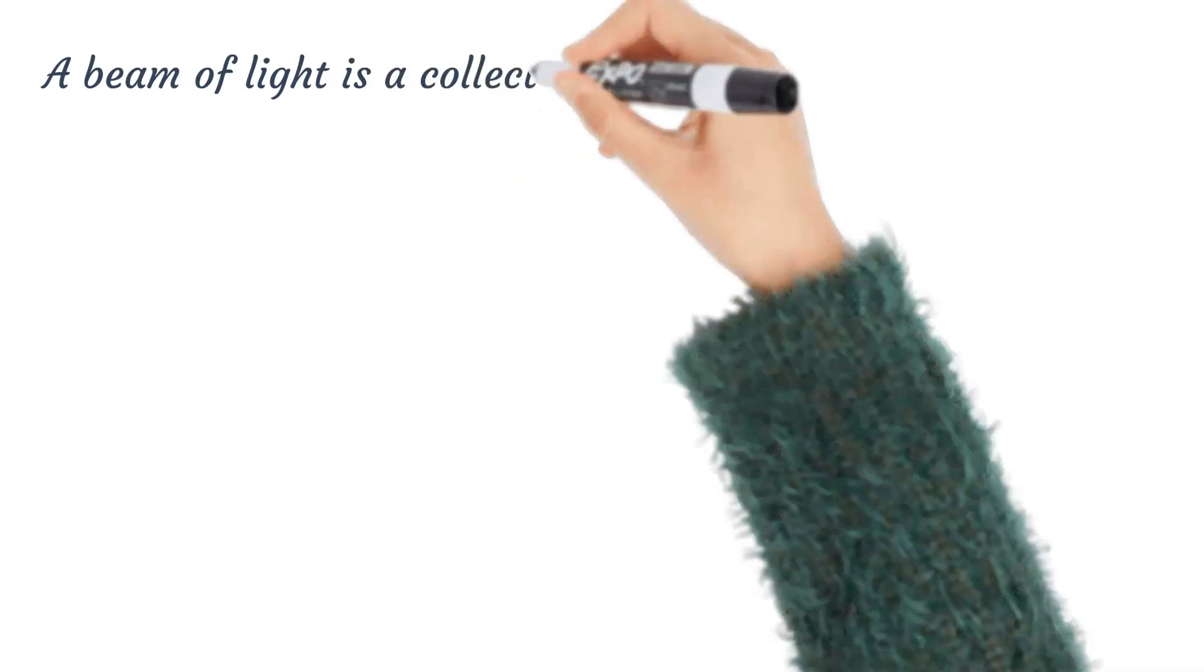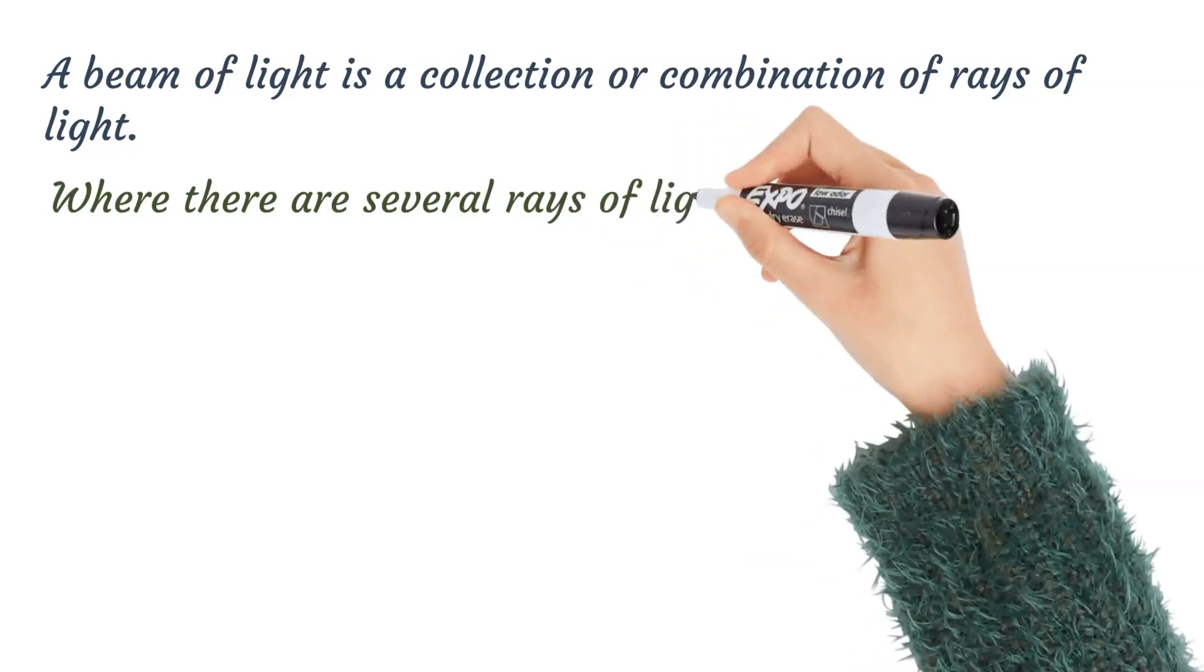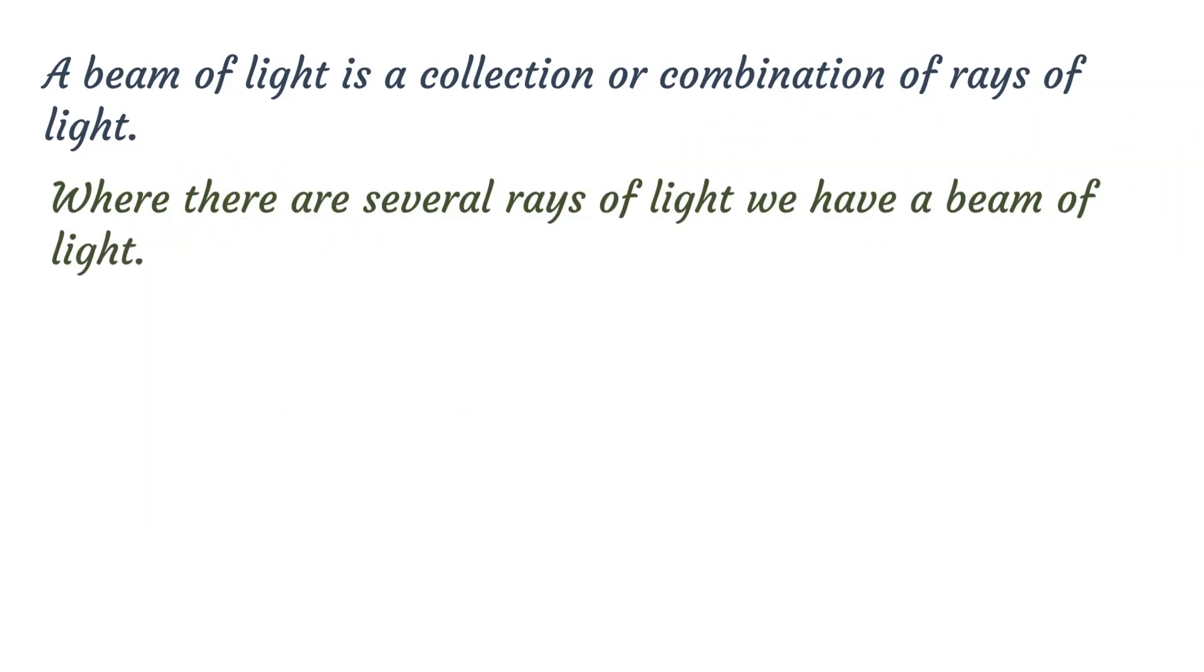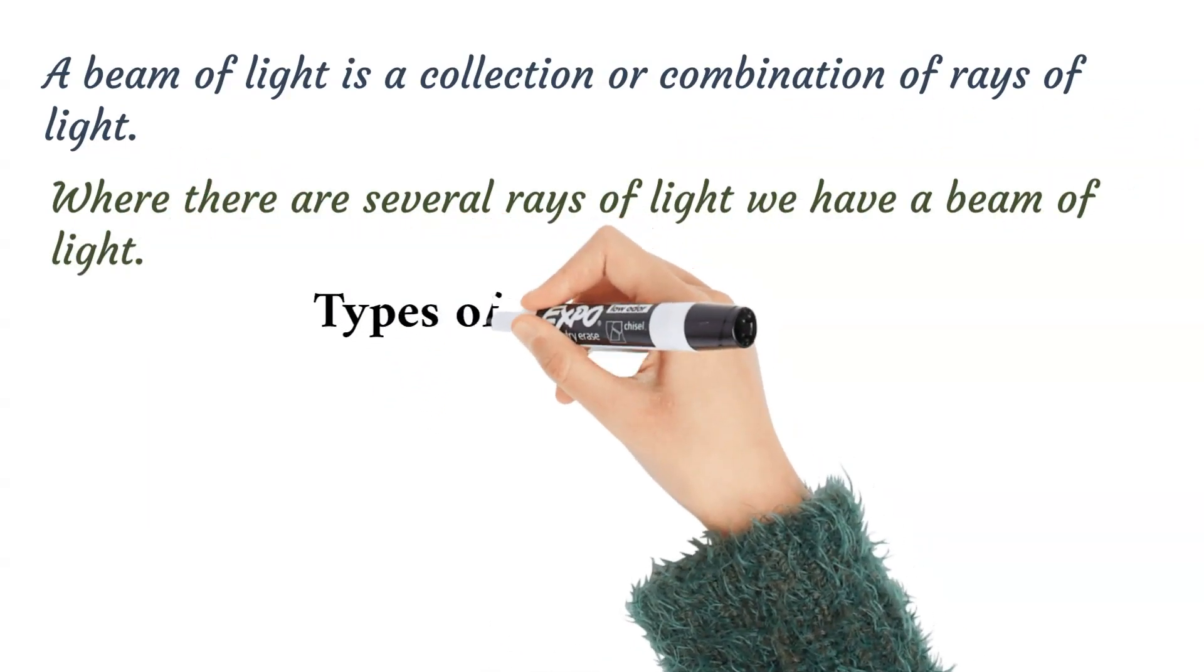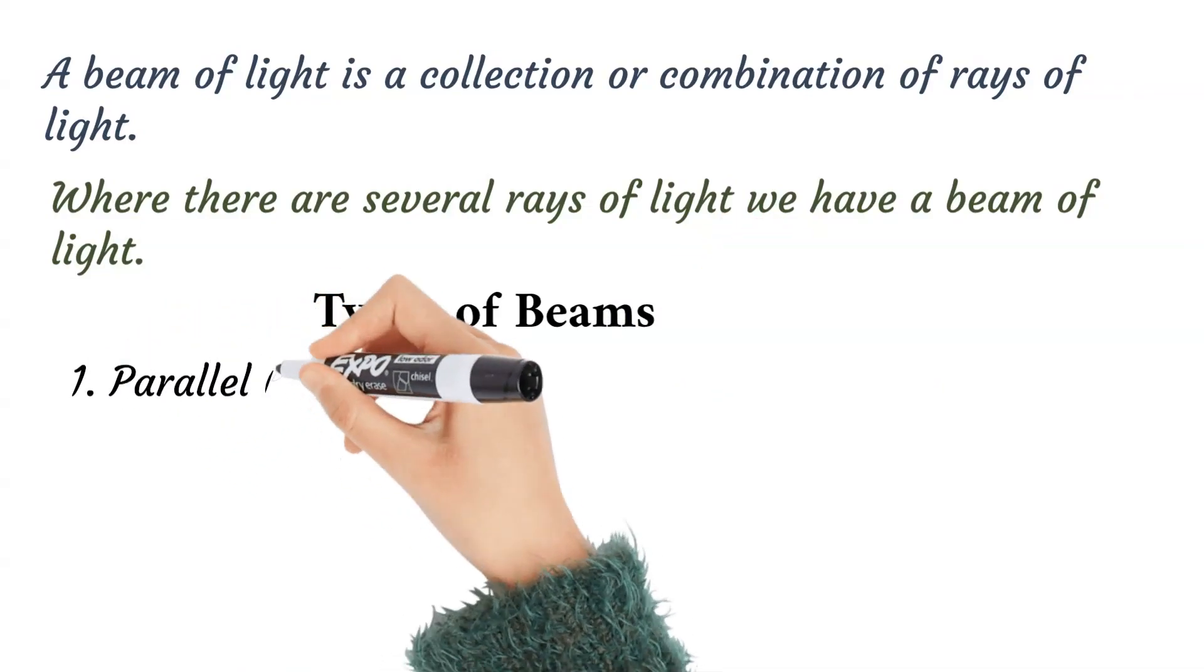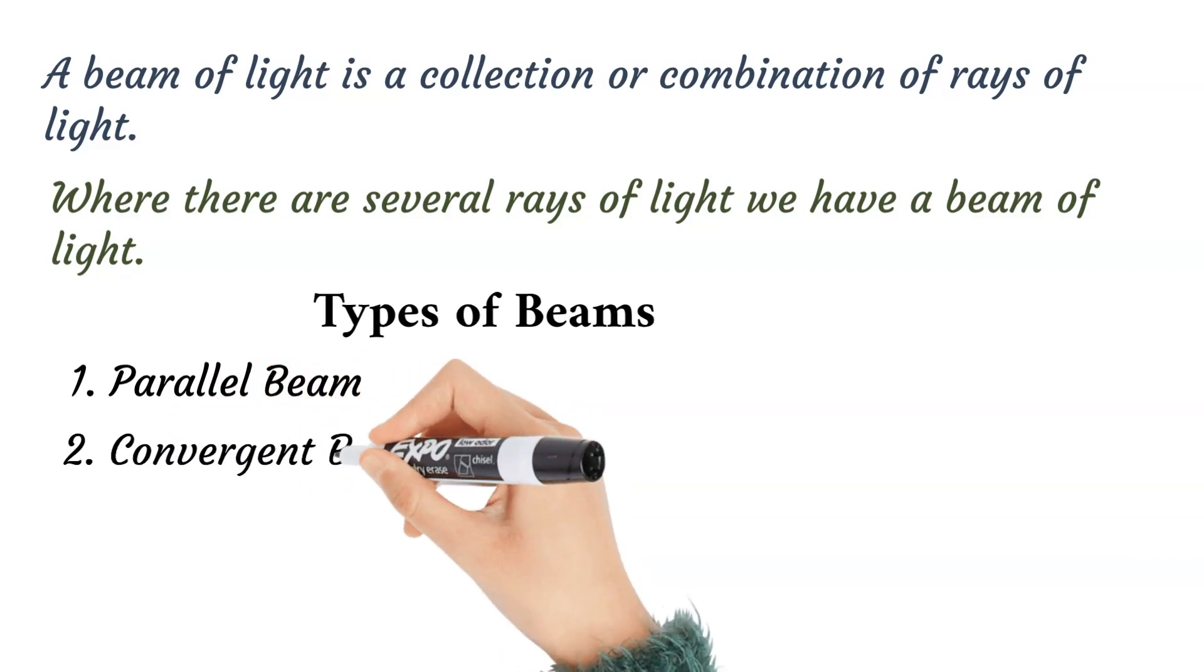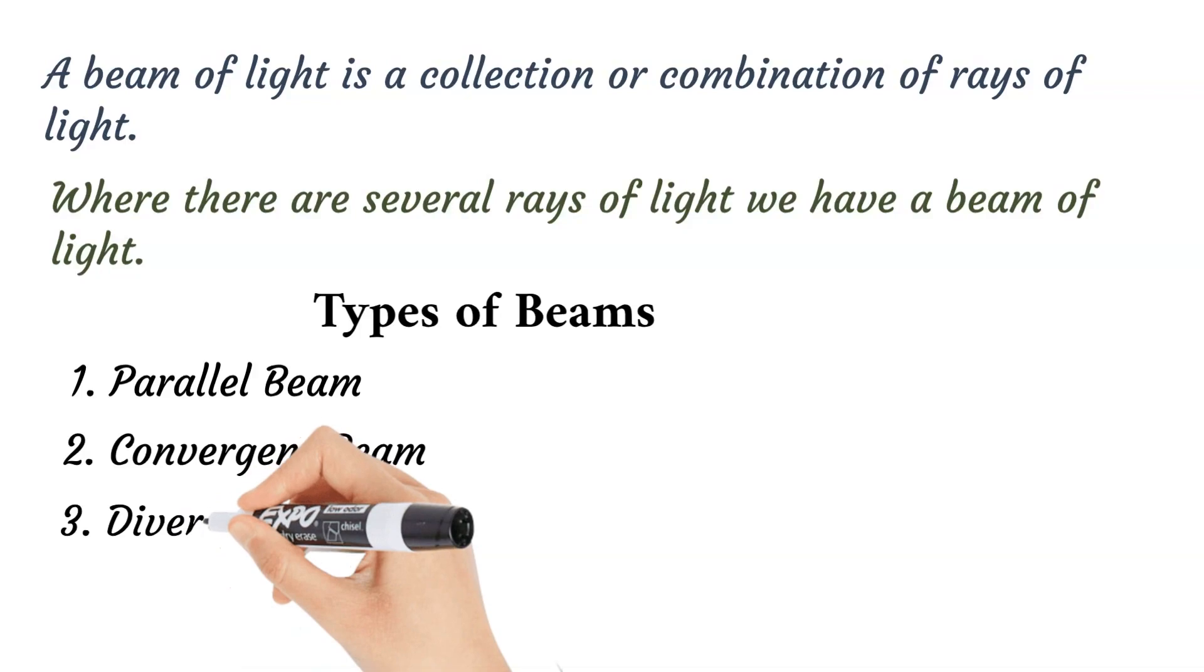A beam of light is a collection or combination of rays of light. When we have several rays of light, we have a beam of light. Types of beams: there are three main types - the parallel beam, the convergent beam, and the divergent beam.